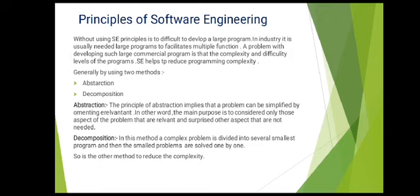This can be shown through two methods: abstraction and decomposition. The abstraction principle implies that a problem can be simplified by omitting irrelevant details and using only the specific, relevant data. This property is known as abstraction.